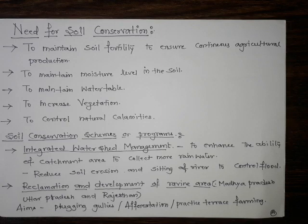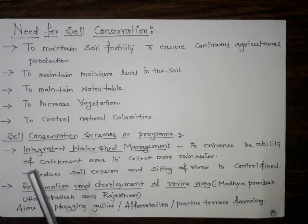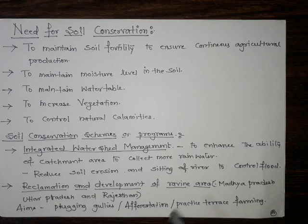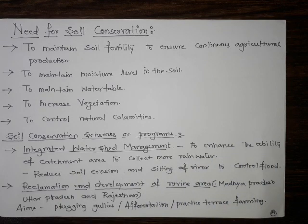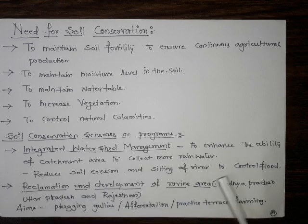There are various programs and schemes for soil conservation. Integrated Watershed Management is very important — they may ask a two-mark question on its aim. The aim is to enhance the ability of a catchment area to collect more rainwater and re-channelize it for agriculture, to reduce soil erosion and silting of rivers, and to control floods.